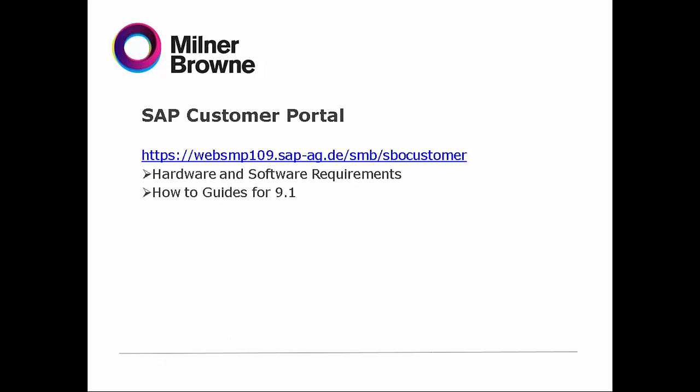You will also find how-to guides — here I'm mentioning 9.1 because for the moment we are working on the latest version supported by Milner Brown, which is 9.1. But you can find any version of SAP you are running. How-to guides are the advanced features of SAP Business One, like analysis features that you don't need to run at the beginning.